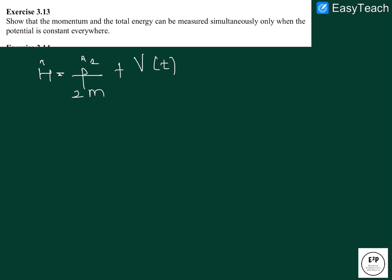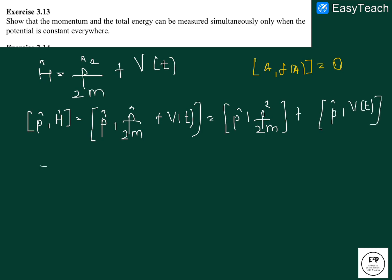The two basic identities which we will be using are: if A and some function of A will always commute. So p hat H hat equals p hat times p squared by 2m plus V of t, which is p times p squared by 2m plus p hat V of t. From this identity we can say that this reduces to zero.